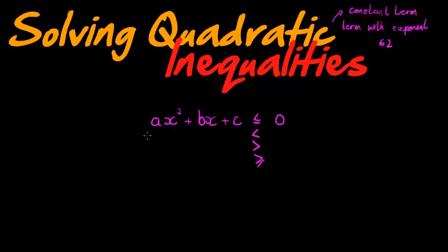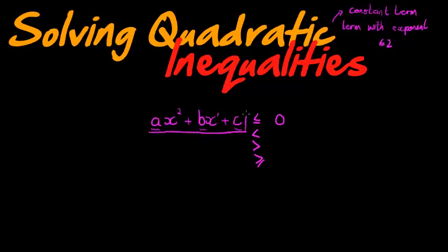So our terms will either be constant — and a constant term actually means it has an unknown to the power of zero, but we just call it a constant and ignore that — or we have terms with x to the power of one, or exponents to the power of two. Remember, a, b, and c are called parameters, and the parameters are actual values like two, seven, one, or whatever. This is the basic format for a quadratic inequality: ax² + bx + c.